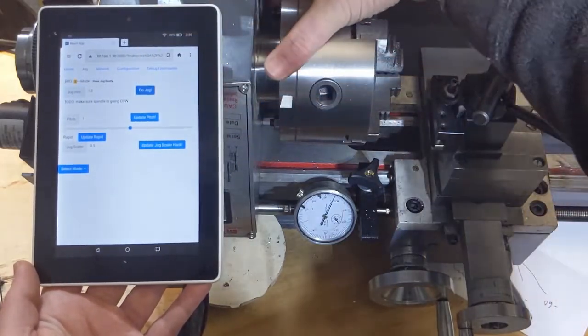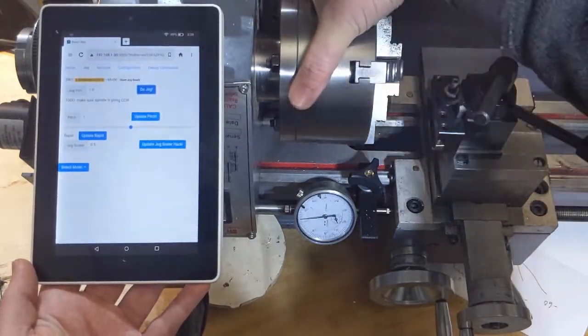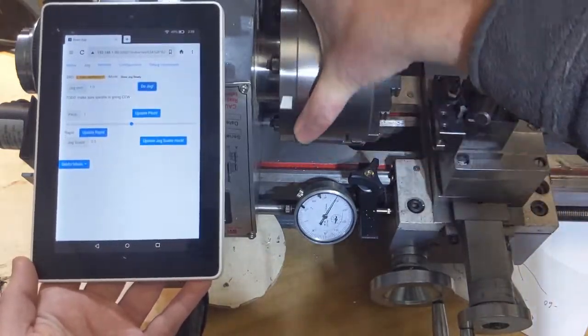So I hit do jog again and it will calculate another millimeter and then stop.